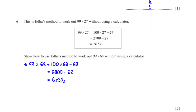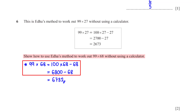This is Ed Heer's method to work out 99 × 27 without using a calculator. Show how to use Ed Heer's method to work out 99 × 68 without a calculator. We replace 99 with 100 and 27 with 68, so we have 100 × 68 − 68. 100 × 68 is 6800, and 6800 − 68 gives us 6732.